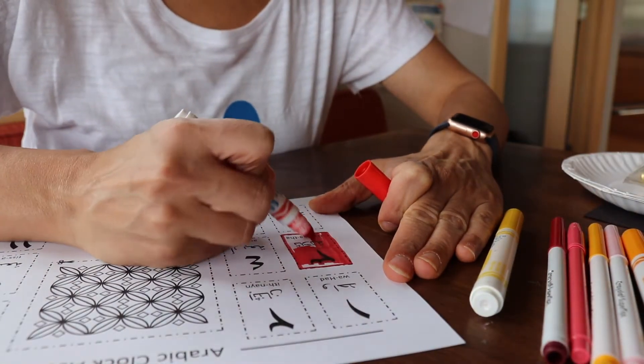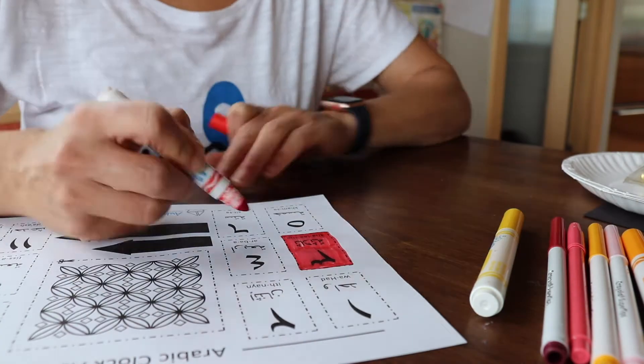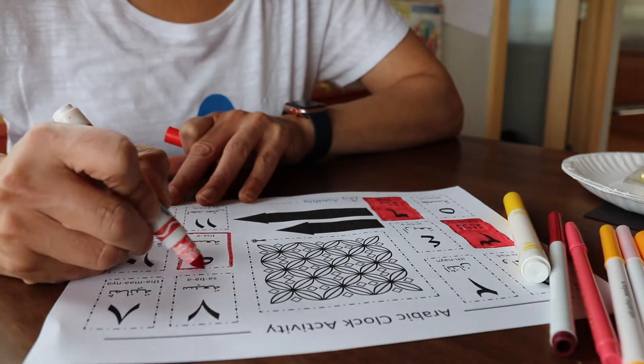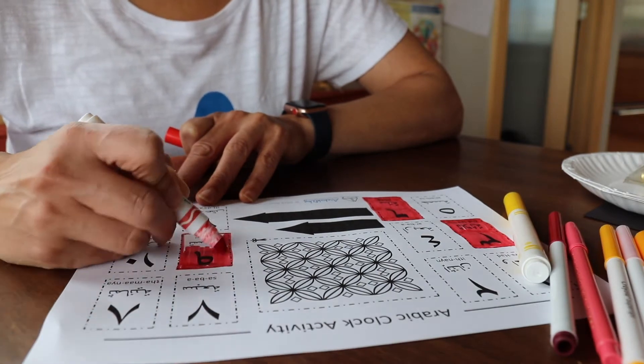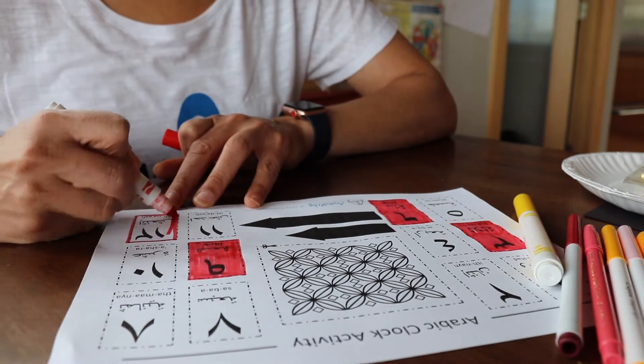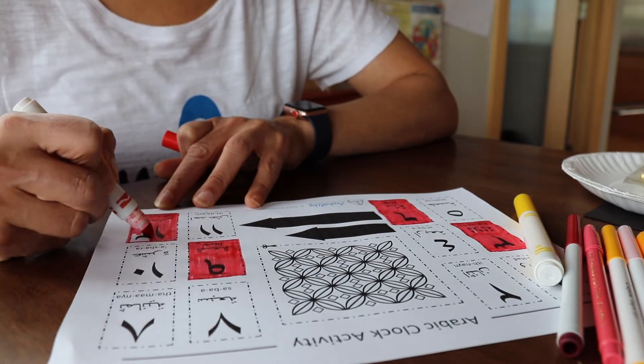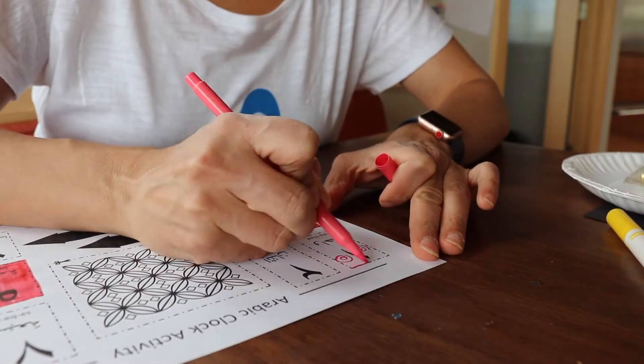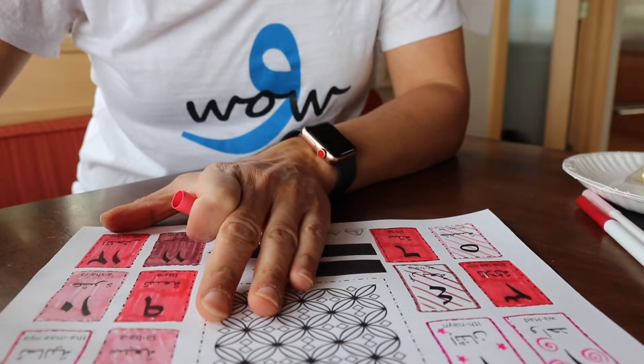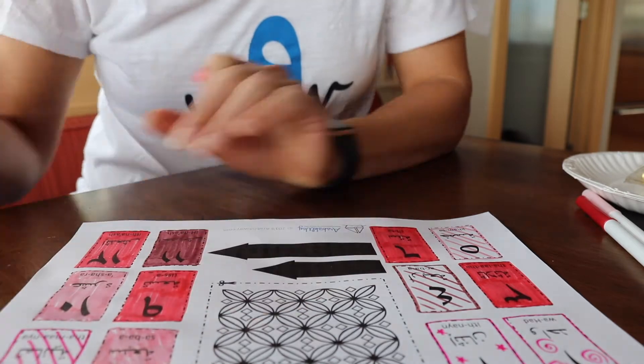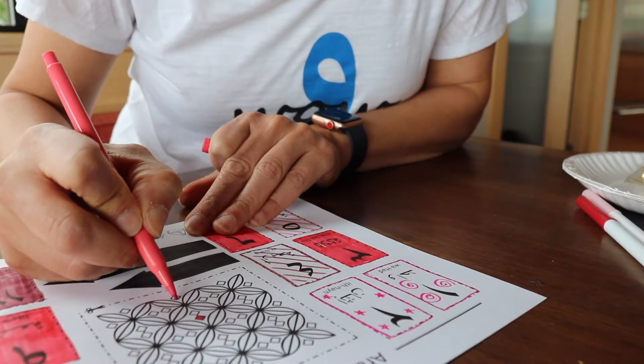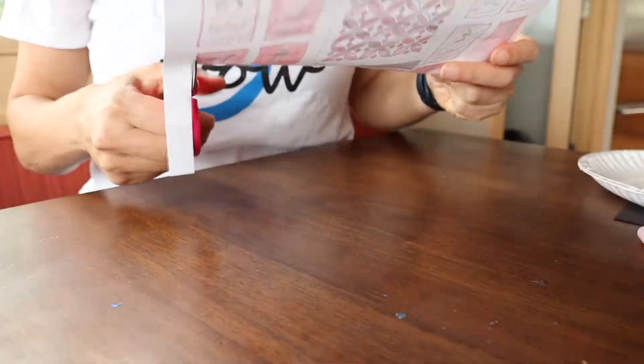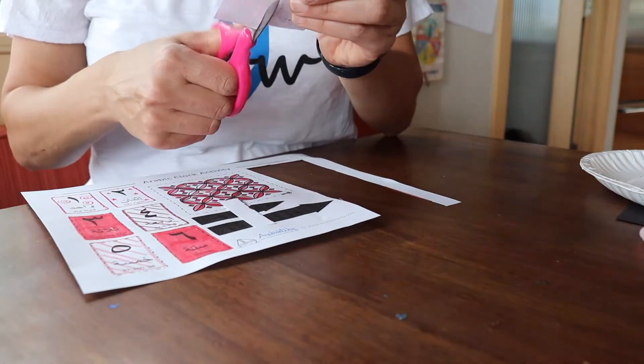So we're going to start coloring and I like to highlight the 3, the 6, the 9, and the 12. That's Thalatha, Sitte, Tissa, and Ethnash. Those are the ones that you see me coloring in right now. And then the other ones just go crazy, and you don't have to do it this way, you can color them any way you want. And then there's the centerpiece that you can color in, and once that's all colored or you're satisfied you can start cutting out all those pieces.